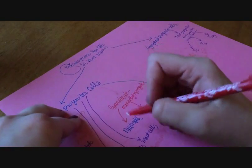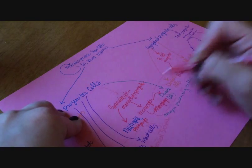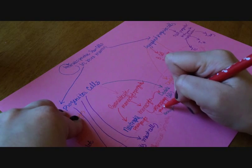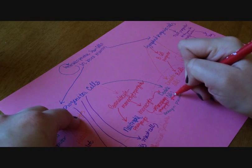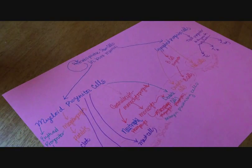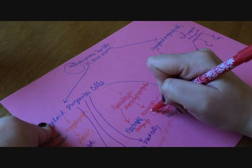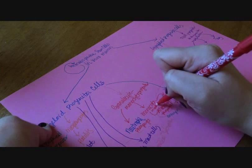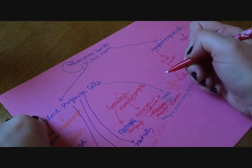Neutrophils are phagocytes. Macrophages are phagocytes. Dendritic cells can sometimes do phagocytosis. Monocytes are in the bloodstream all the time and differentiate later. I'll just write in differentiate.